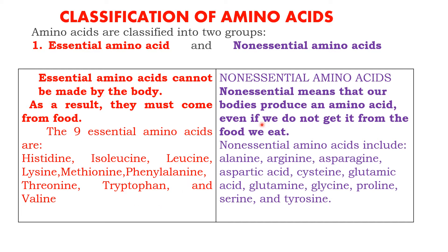What are non-essential amino acids? These we need not supply because our body will produce them. The body will automatically produce these amino acids for our biological processes. They are called non-essential amino acids. Examples are alanine, arginine, and asparagine.